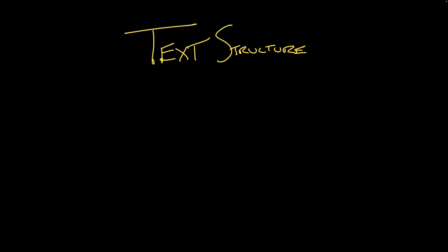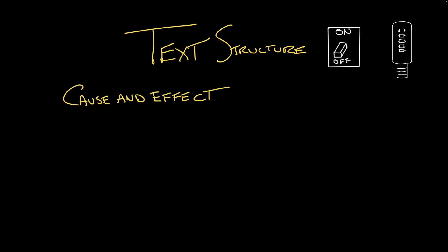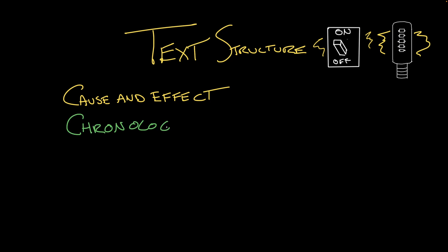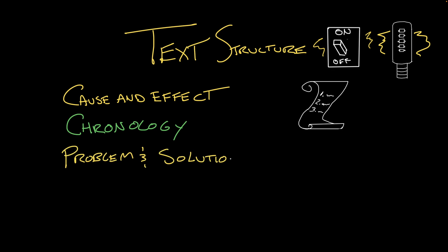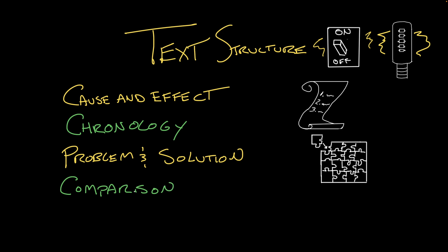There are many different kinds of text structures, but here are a few common ones you might have already heard of. There's cause and effect — one thing caused or led to another thing. There's chronology — here are the things that happened in the order they happened. There's problem and solution — there was something wrong and here's what made it right. And there's comparison — here's one thing and here's another, and let's look at each of them and see what they've got in common and what makes them different.